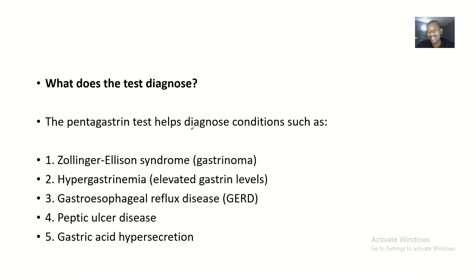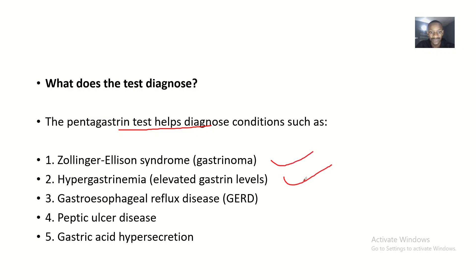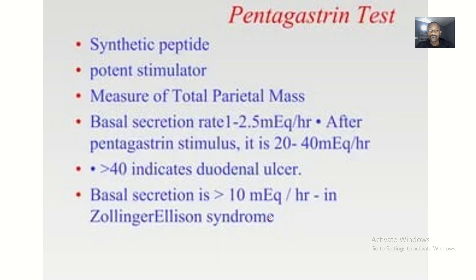The pentagastrin test helps to diagnose several medical conditions, including Zollinger-Ellison syndrome (gastrinoma), hypergastrinemia (elevated gastrin levels), gastroesophageal reflux disease (GERD), peptic ulcer disease, and gastric acid hypersecretion.